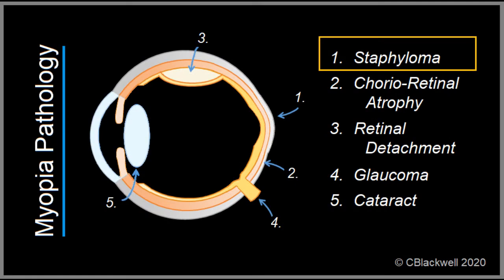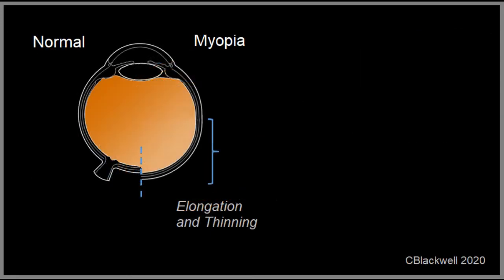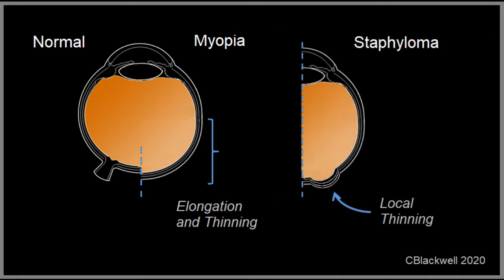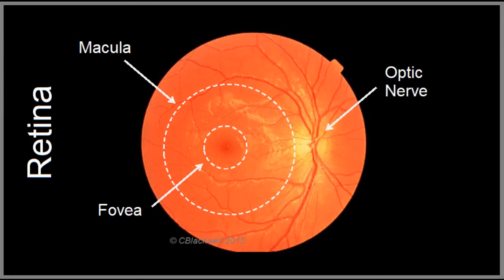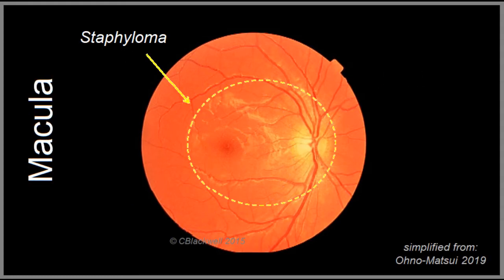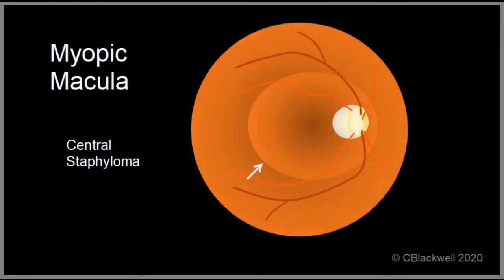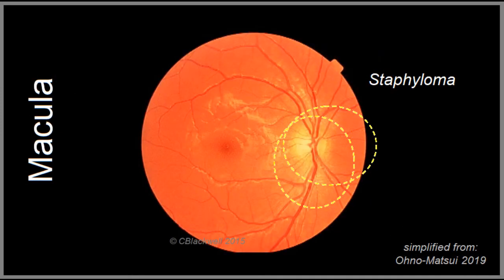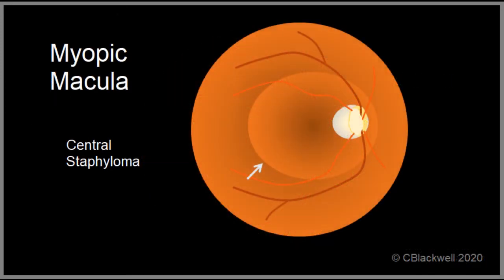The first myopic complication on our list is staphyloma. We know that myopic eyes are longer and the back layers are thinner than ideal. However, there can be additional localized thinning and bulging of the back of the eye — a staphyloma. Where this happens is important. The macula is the central part of the retina, and the area in the middle of the macula is the fovea, with which we see fine detail like reading and recognizing faces. The staphyloma or thinning can occur in different locations — relatively broad, encompassing most of the macula and optic nerve, or relatively smaller and in other locations involving the optic nerve or areas near it. The presence of a staphyloma stretches and distorts the retina and may be associated with new vessel growth.